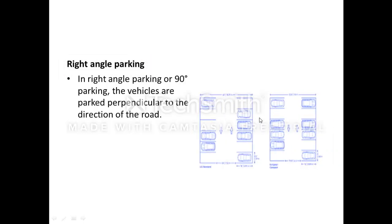The last one is right-angle parking, also known as 90-degree parking. In this type of parking, the vehicle is perpendicular to the direction of the road. This is the road and the vehicle is perpendicular to the alignment of the road. It is called right-angle parking.